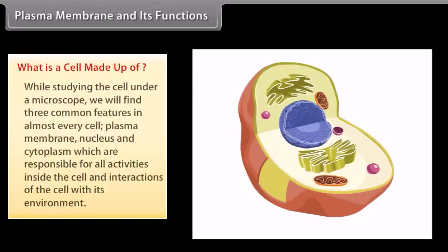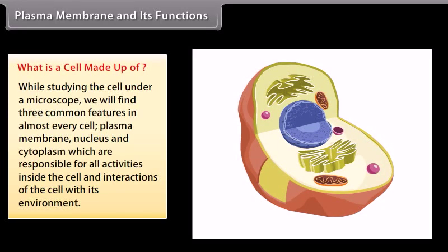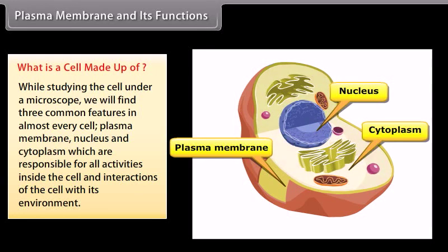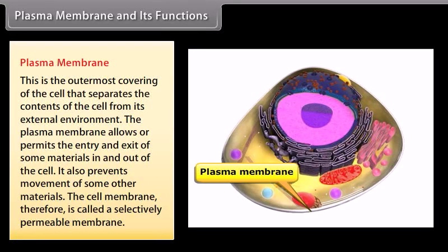What is a cell made up of? While studying the cell under a microscope, we find three common features in almost every cell: plasma membrane, nucleus, and cytoplasm — which are responsible for all activities inside the cell and interactions of the cell with its environment. The plasma membrane is the outermost covering of the cell that separates the contents of the cell from its external environment.